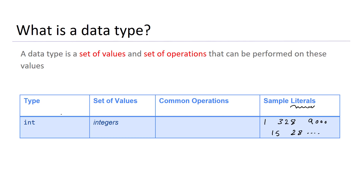In Python, there are a number of operations we can do on integers. For example, I can take two integers and add them together using the plus operator. I can subtract two integers from each other using the subtraction operator. I can multiply integers using the multiplication operator — note that in Python you multiply numbers using the star operator, not the multiplication symbol used in mathematics.